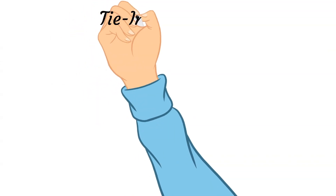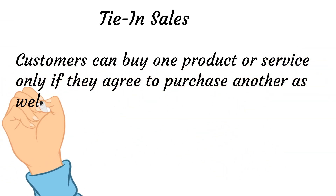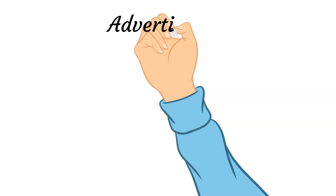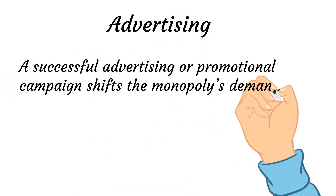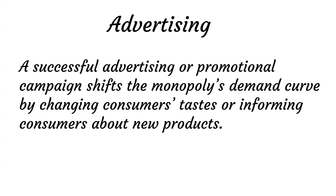Another form of non-uniform pricing is a tie-in sale, in which customers can buy one product or service only if they agree to purchase another as well. Firms could advertise to maximize net profit. A successful advertising campaign shifts the demand curve by changing customers' tastes or informing them about new products. A monopoly may change the tastes of some customers by telling them that a famous person uses the product, shifting the demand curve to the right or making it less elastic.